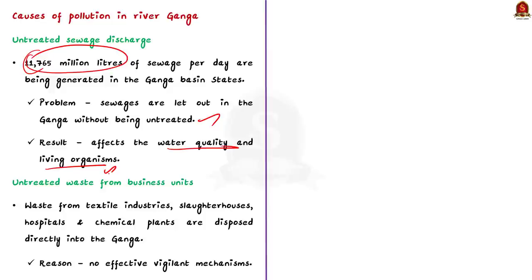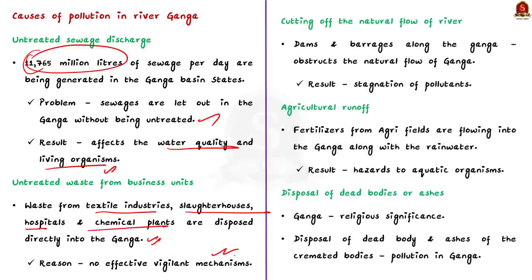The second main cause is discharge of untreated waste from business units. A large number of business units along the Ganga — like textile industries, slaughterhouses, hospitals, and chemical plants — dispose of their untreated waste directly into the river. Despite some vigilance mechanisms, businesses are still illegally dumping waste into the river.